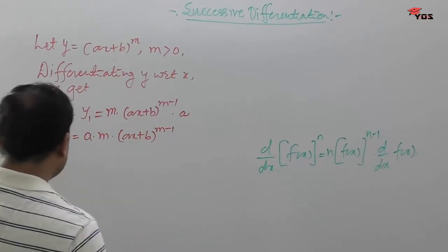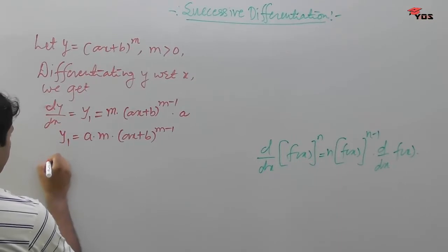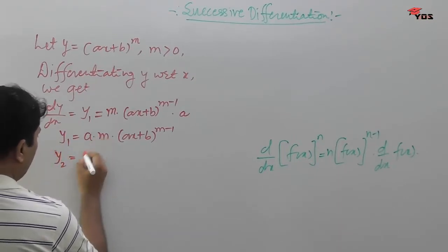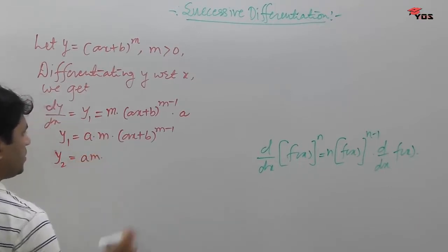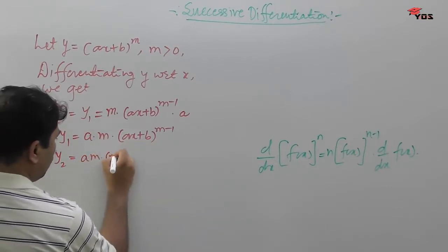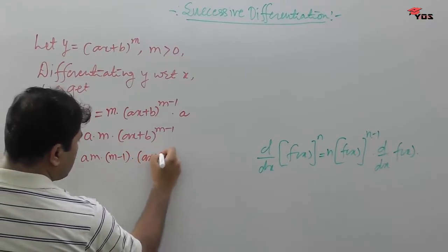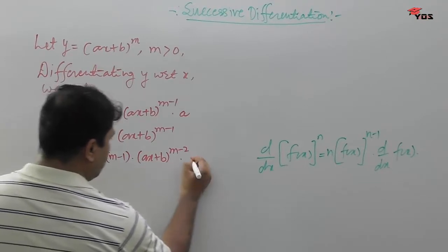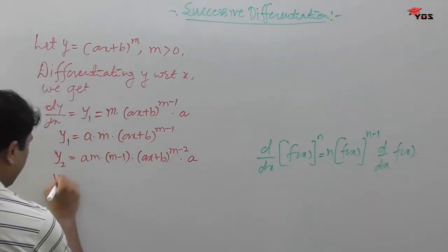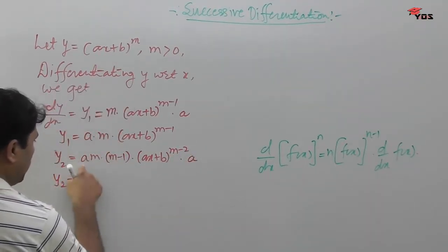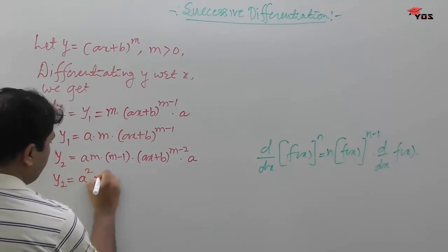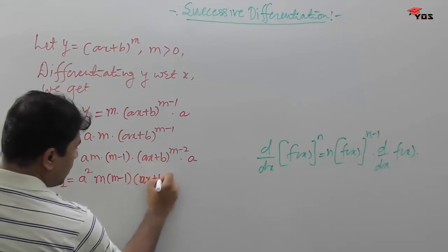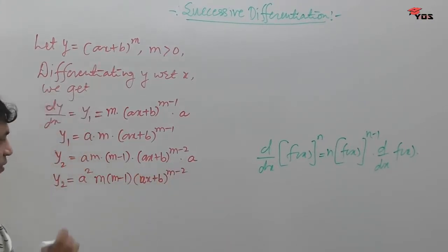Again, we differentiate y1 with respect to x. The term am remains, and differentiating (ax+b)^(m-1) brings down (m-1), giving a factor of a again. So y2 = a²·m(m-1)·(ax + b)^(m-2).